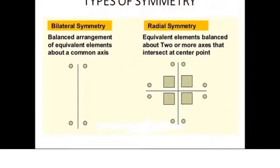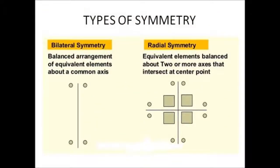Types of symmetry. Bilateral symmetry: balanced arrangement of equivalent elements about a common axis. This means one axis of symmetry may also be known as bilateral symmetry.